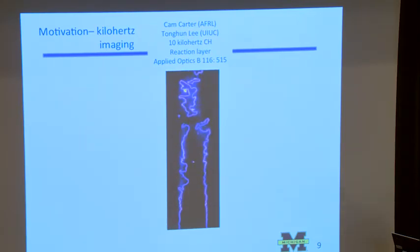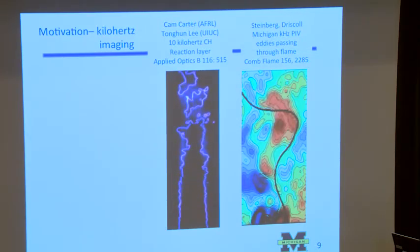And the way they do that is they image CH, which is a radical. It's only existing in the reaction zone. And you shine an ultraviolet laser through the flame. And then you image it, the radiation, the fluorescence that comes out from CH. So we're learning a lot of what's happening inside those turbulent flames.